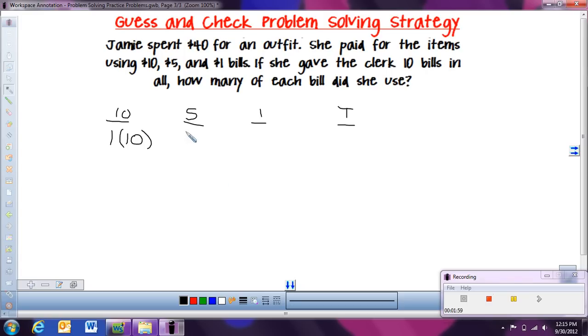And then I think I'm going to stick with two $5 bills. That will also give me $10. And so now I need to get up to $40. So here I've got $10, here I've got $10. So that means I need $20 more, which means I would need 20 more bills.